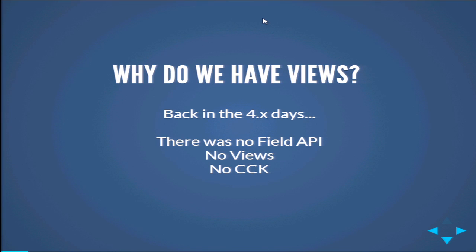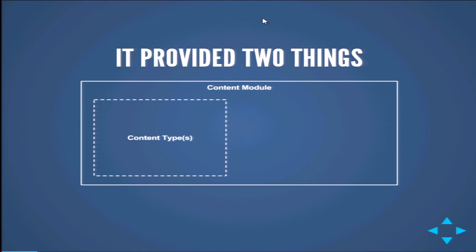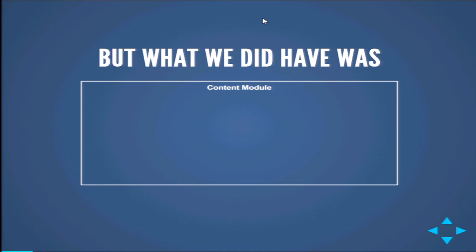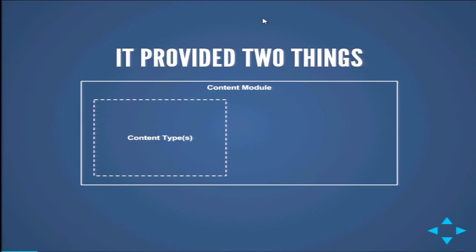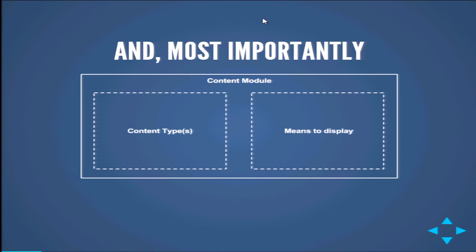So why do we have Views? Let's do a little bit of history before we get into defining what a view is. Back in the 4.7 days, there was no Field API, no Views, no CCK. What we had was a content module. Content modules did two things: they provided content types, and they provided a means to display. Content modules are awesome because you get a content module and it does exactly what it says on the tin — a podcast, a blog post, whatever — and you get the ways to display it on your site. It's a package deal.